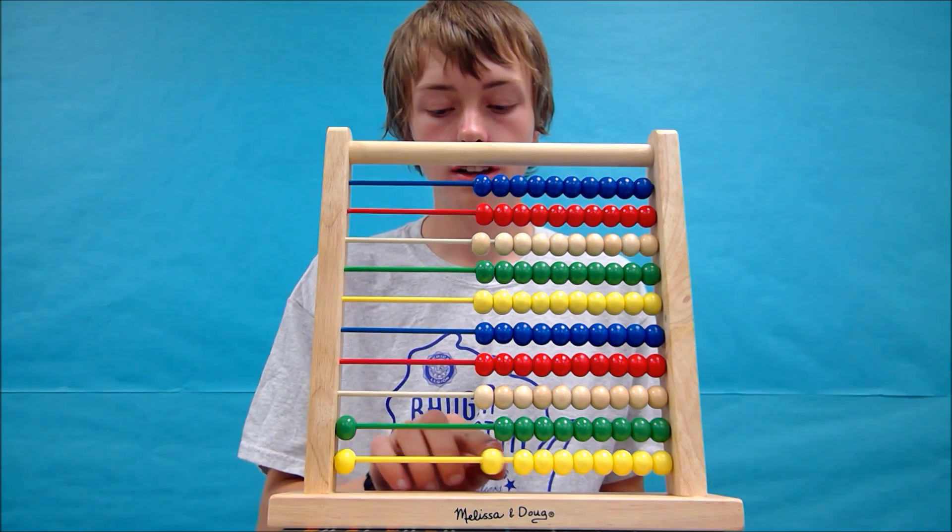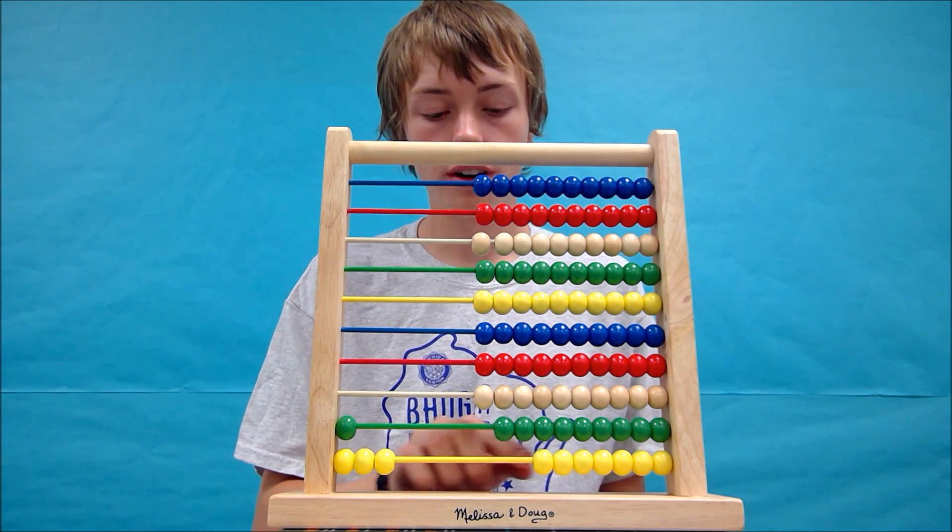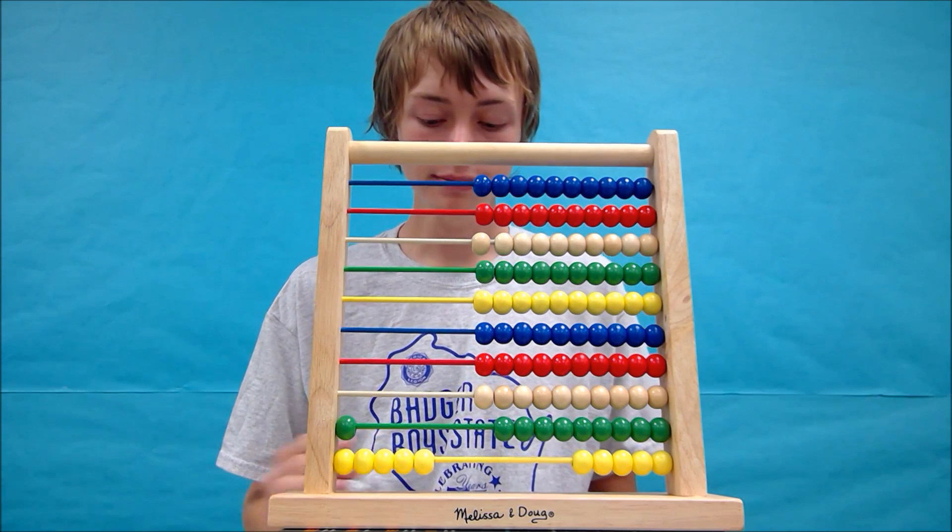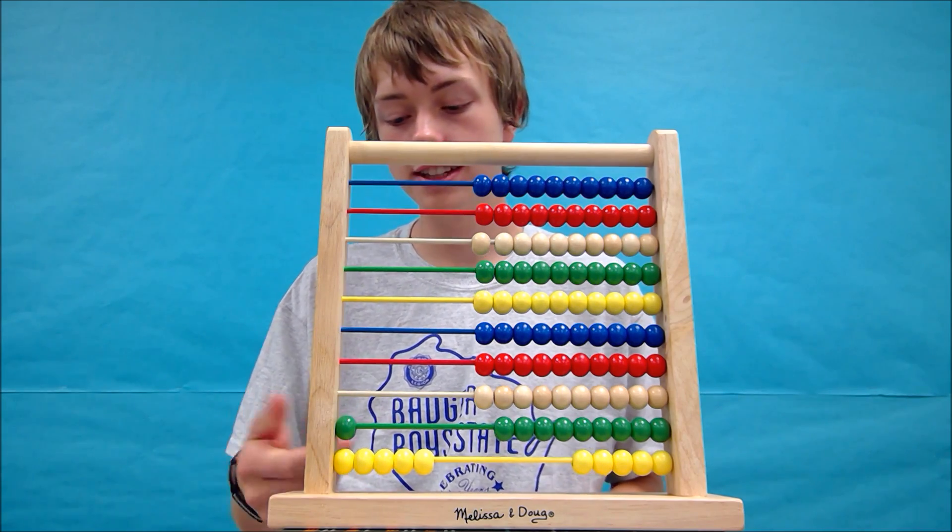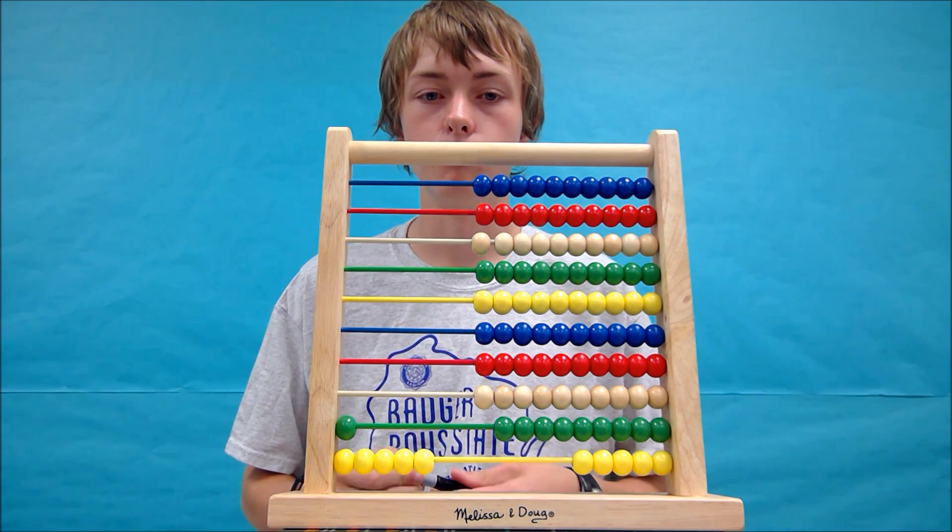So we go 2, 3, 4, 5, 6. And that gives us our number that we can write down if necessary. Again, this is an easier one, but later on writing down the numbers will help.